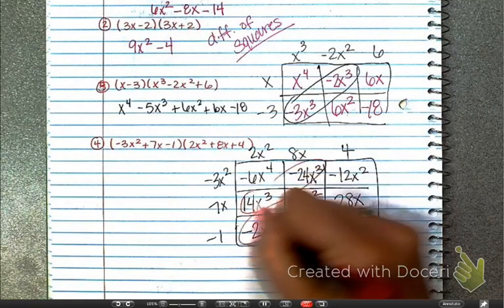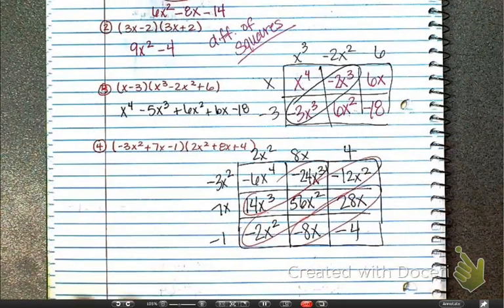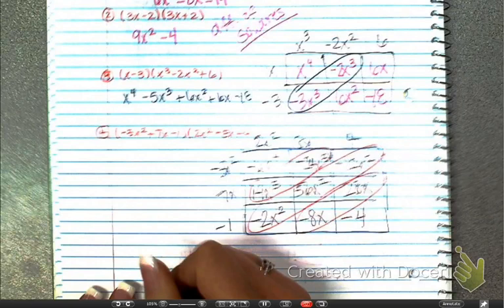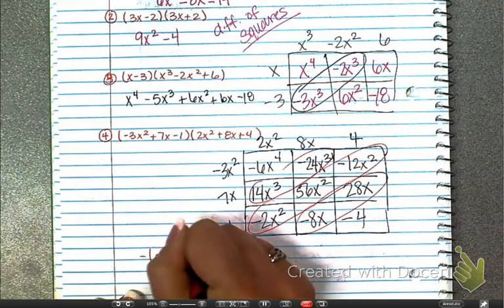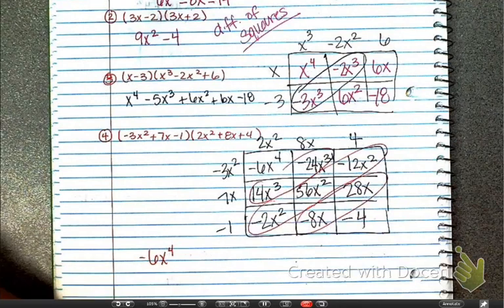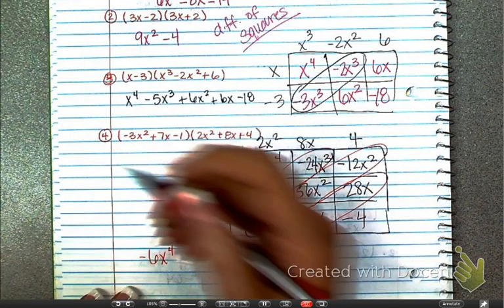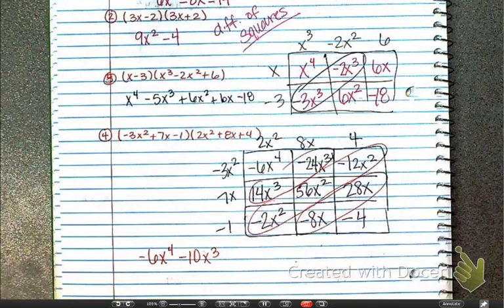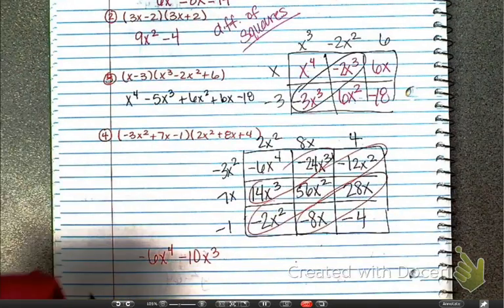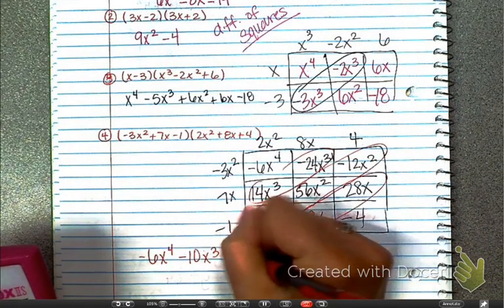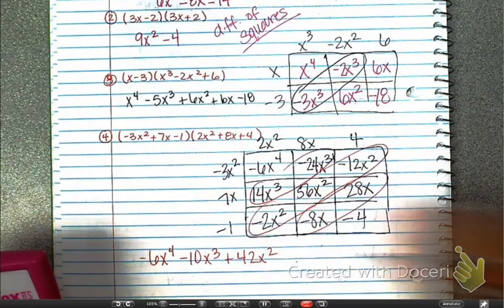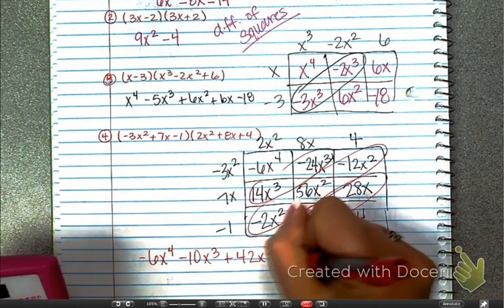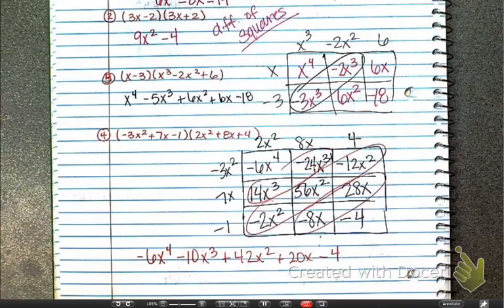Here are my like terms. Final answer: negative 6x to the fourth. I have 14 and negative 24, so 14 minus 24 gives me negative 10x to the third. Then I have negative 2 plus 56 which is positive 54, minus that 12, which gives me positive 42x squared. And then I have negative 8 plus 28, which is positive 20x, with the negative 4 attached at the end.